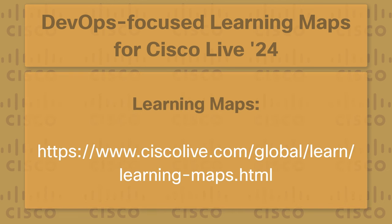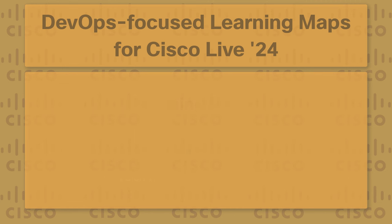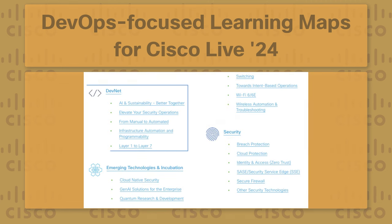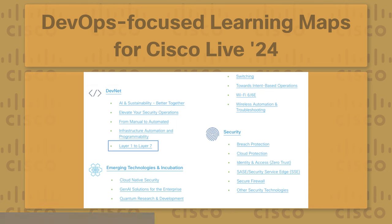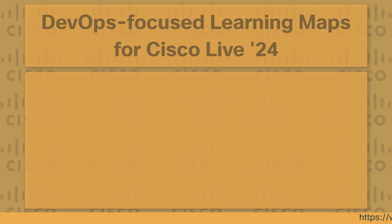We can find all learning maps for Cisco Live at this URL. One such DevOps related learning map, which may be found under the DevNet Learning Maps section, is titled Layer 1 to Layer 7. Here's the description.